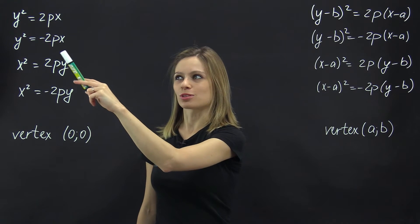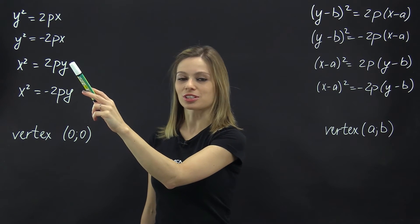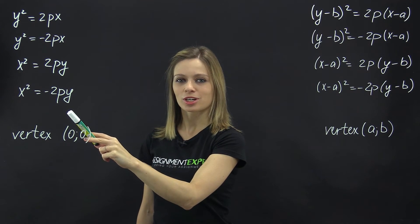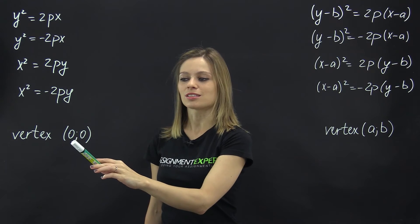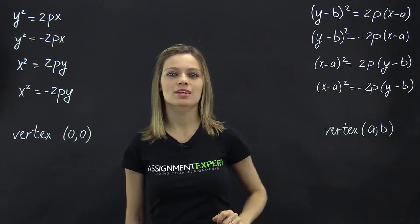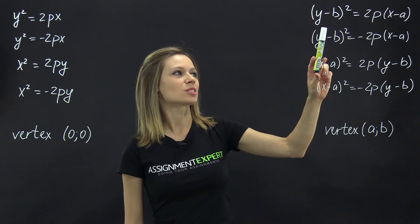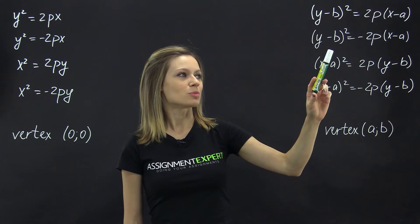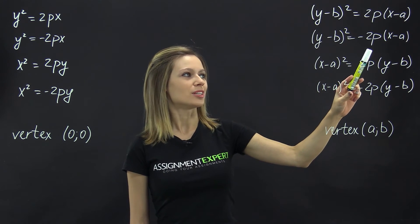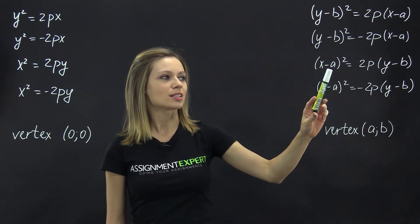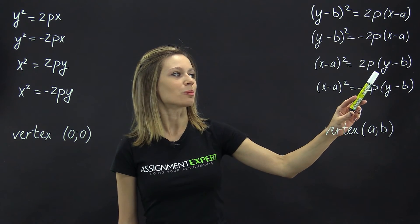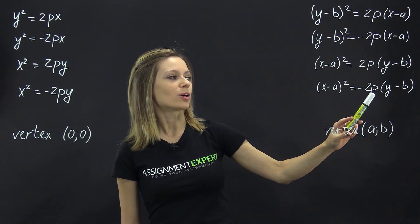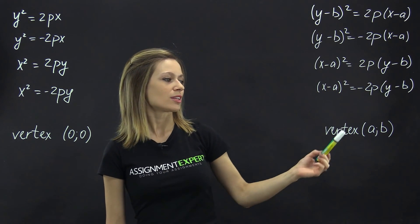Parabolas y squared equals 2px, y squared equals negative 2px, x squared equals 2py, and x squared equals negative 2py have vertices at the coordinates (0, 0). Parabolas given by (y minus b) squared equals 2p times (x minus a), (y minus b) squared equals negative 2p times (x minus a), (x minus a) squared equals 2p times (y minus b), and (x minus a) squared equals negative 2p times (y minus b) have vertices at the coordinates (a, b).